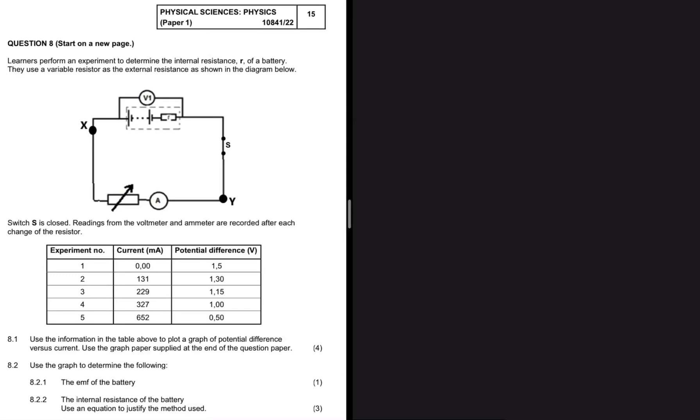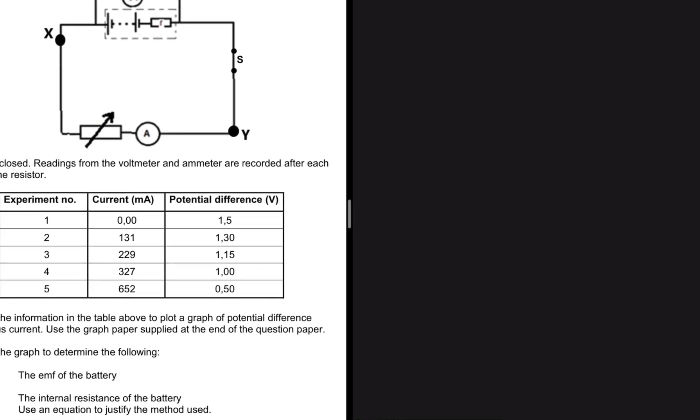Let's perform an experiment to determine the internal resistance r of a battery. We use a variable resistor as the external resistance as shown in the diagram below. You can see the setup there, and these are the results of the experiment. We have experiments one, two, three, four, and five.